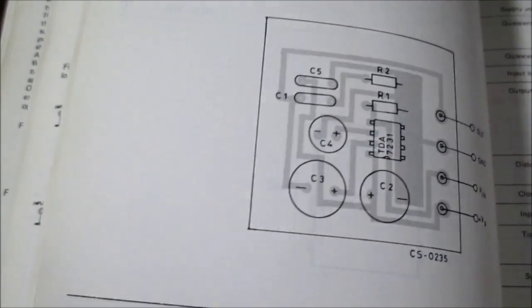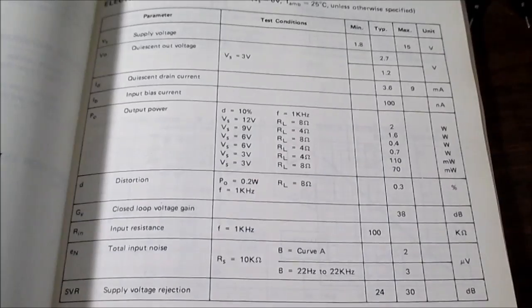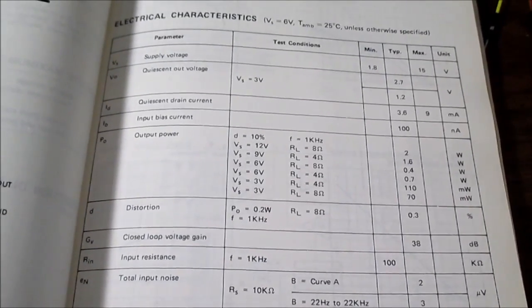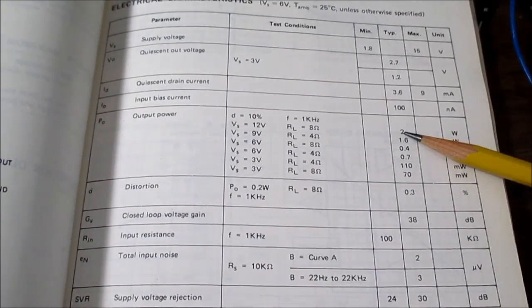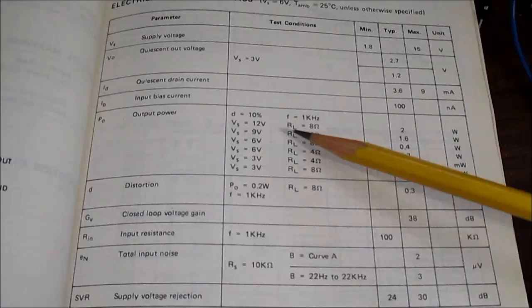They even give you a sample board layout. And here are some of the electrical characteristics. We should be able to get up to 2 watts of output at 12 volt 8 ohms.